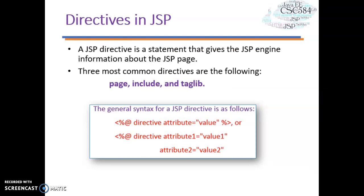Now let's learn about another subtopic: directives in JSP. A JSP directive is a statement that gives the JSP engine information about the JSP page. The three most commonly used directives are page, include, and taglib. For example, if your JSP page uses a Java class from a package other than java.lang, you must use a directive to import that package. The general syntax is: alias, directive, attribute, and value. If you need more than one directive, the syntax extends accordingly.